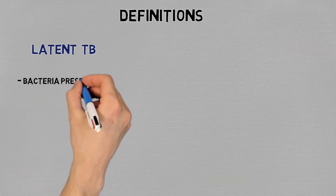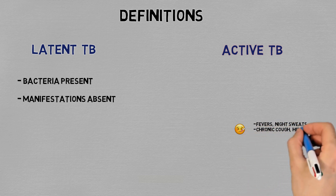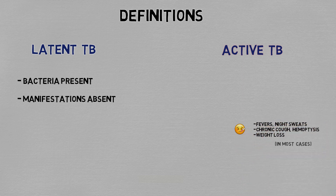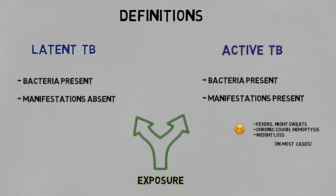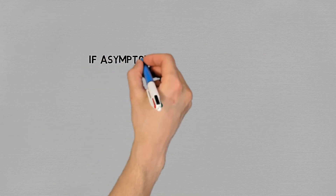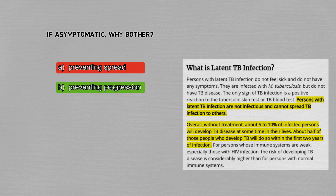First of all, definitions. Latent TB is the presence of mycobacterium tuberculosis without causing active disease. Active tuberculosis is a disease that causes fevers or night sweats, chronic cough or hemoptysis, and weight loss. Due to many known and unknown reasons, some people will be exposed to the bacteria and will lie dormant for a while without producing any manifestations of disease. It's an asymptomatic infection. Contrary to what a lot of people think, latent TB is not contagious in and of itself, but it does have a well demonstrated risk of progression to clinical tuberculosis, so that's why we treat it.